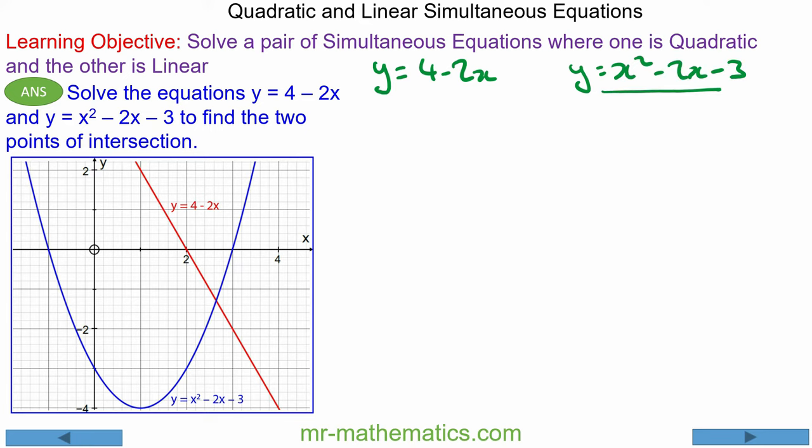Now this equation is the parabola, the blue equation, and this equation is the linear red equation. The solutions are where the two equations meet, and you can see if you were to carry this parabola upwards and this linear equation upwards they would meet again.